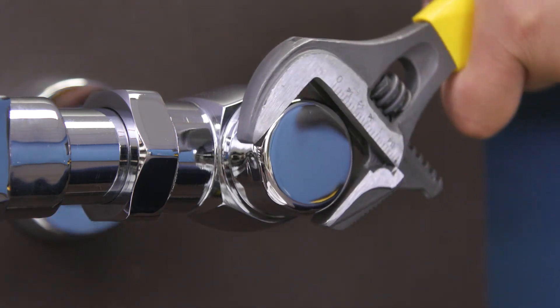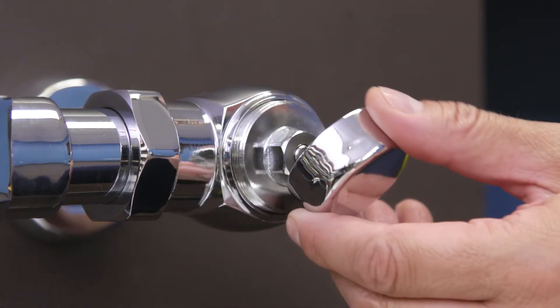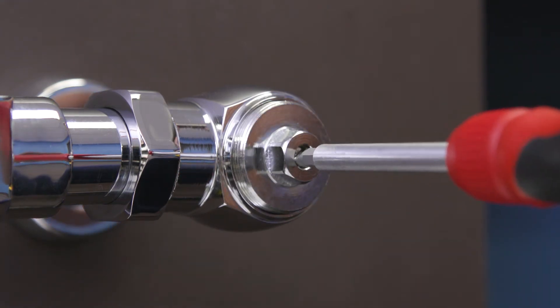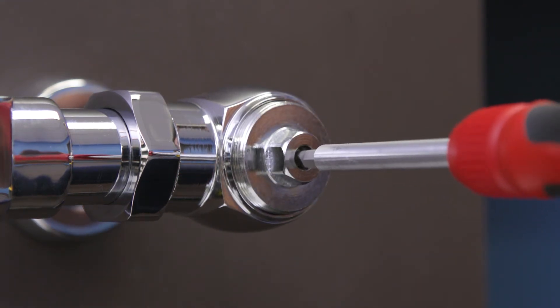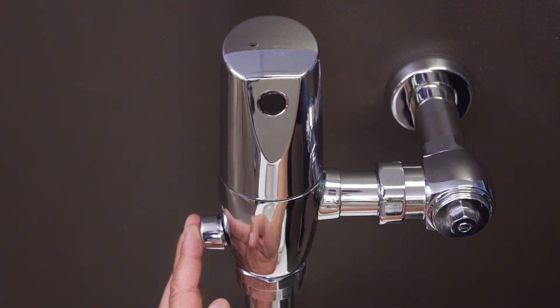First, shut off the water to the flushometer. Remove the cap and use a flat blade screwdriver to turn the screw clockwise until the control stop closes. Next, hold down the button to remove any remaining water.